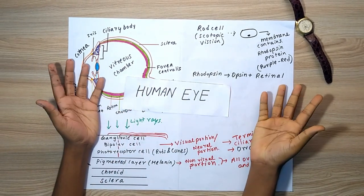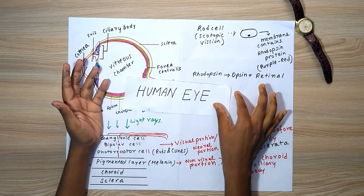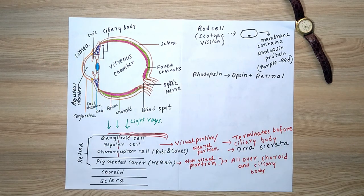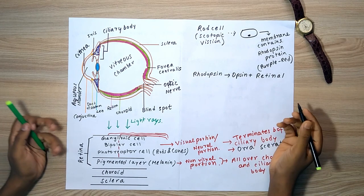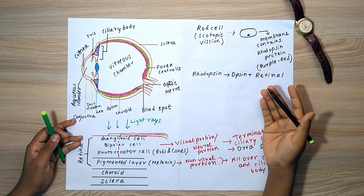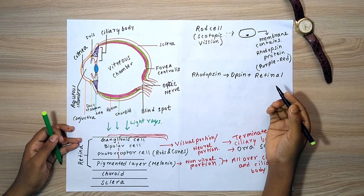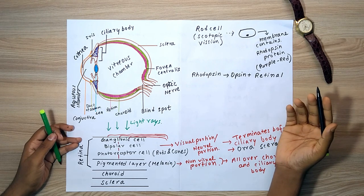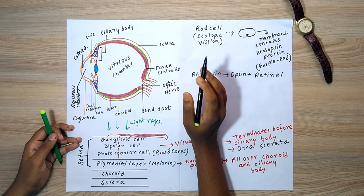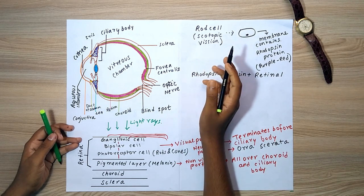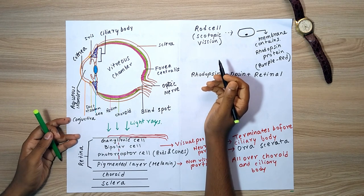Today we're going to discuss the human eye and the principle of how rod cells function during night and low light conditions. Let's first talk about the structure of the eye. The eye involves mainly three parts: the layer surrounding the eyeball, the lens, and other accessory structures. We know that we have three layers: sclera, choroid, and retina.